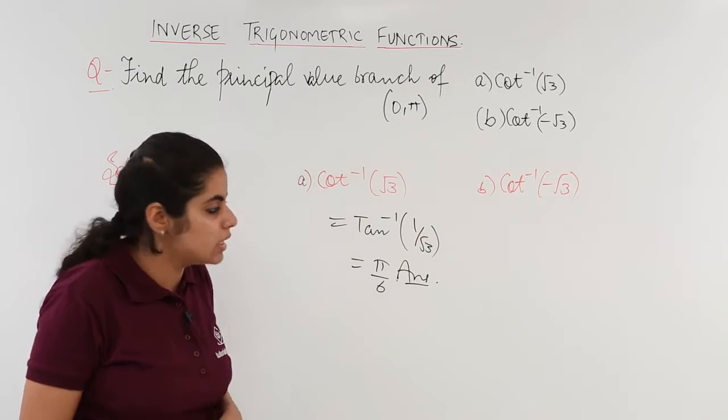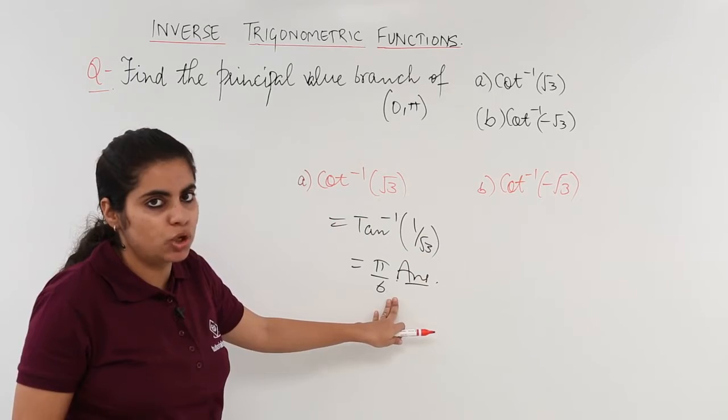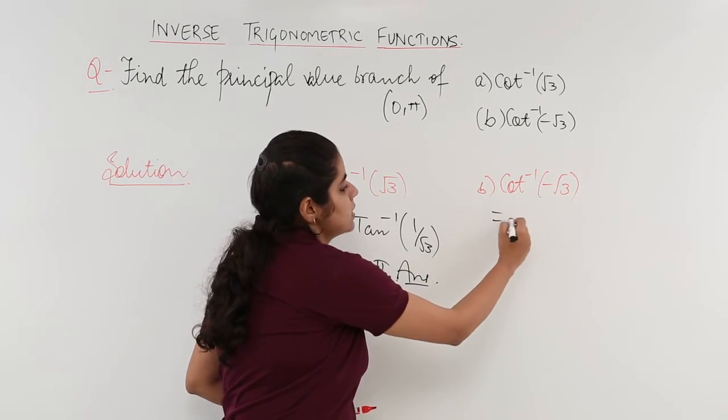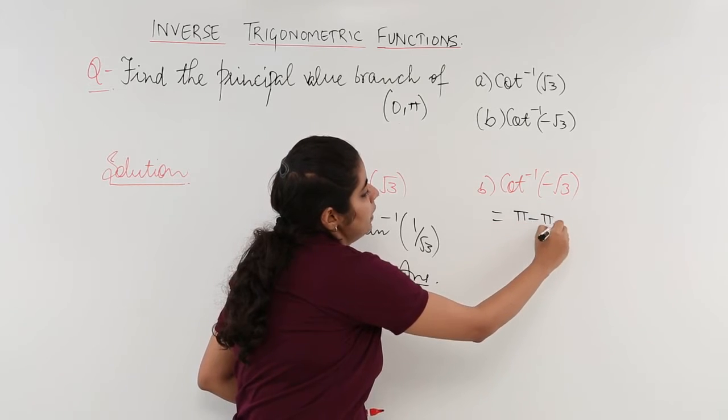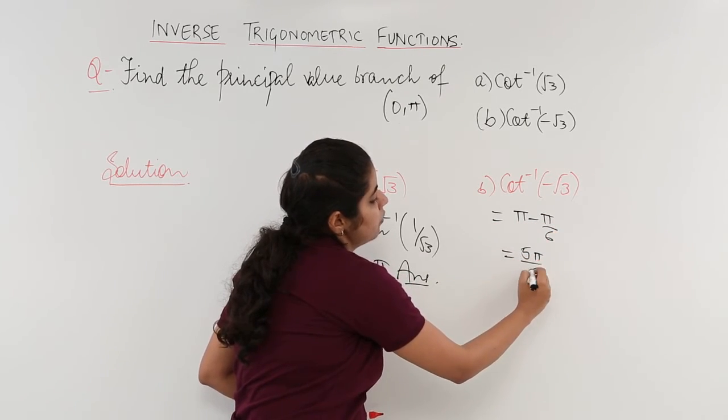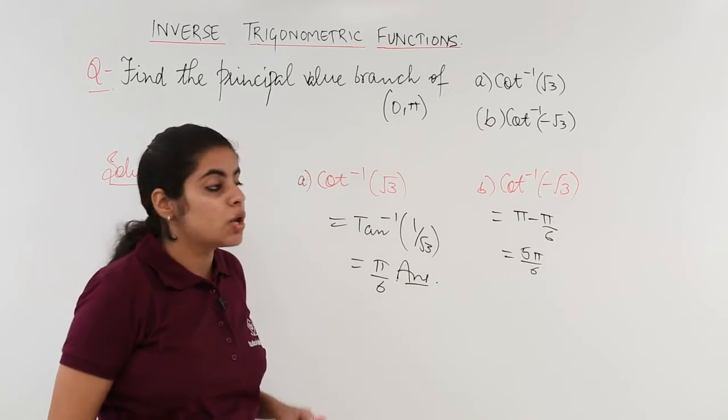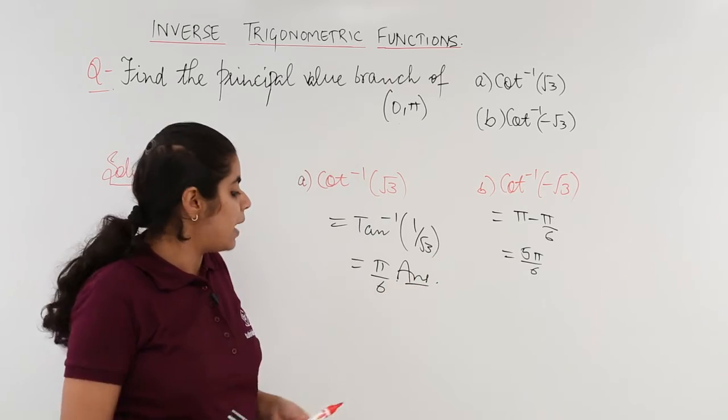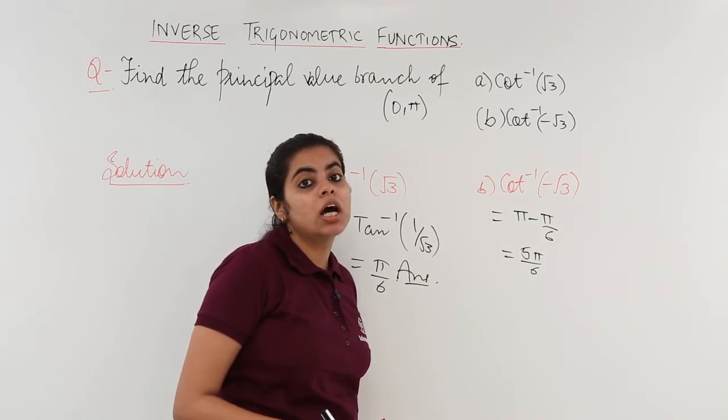Hence, we need to change some things. π by 6 should not be there. It should be minus π by 6. Minus π by 6 can be modified to 2π minus π by 6 which is 5π by 6. Why 5π by 6? Because otherwise we could not have included minus π by 6 in the answer, in the principal value branch.